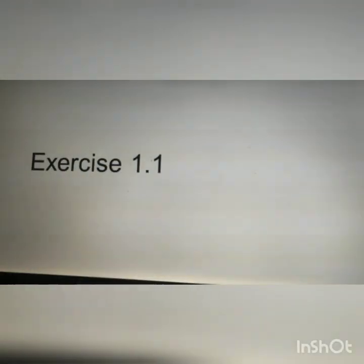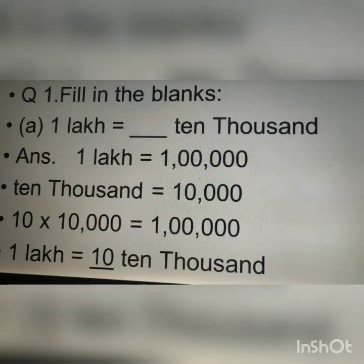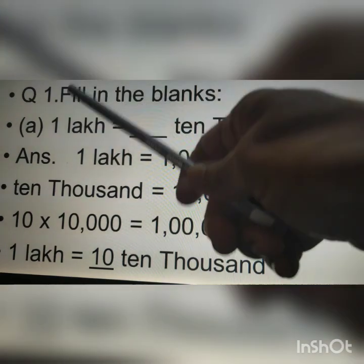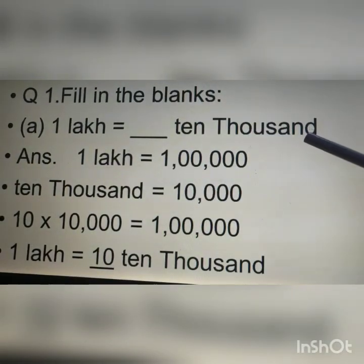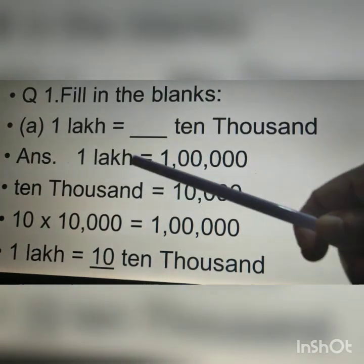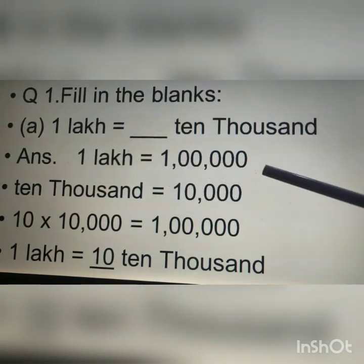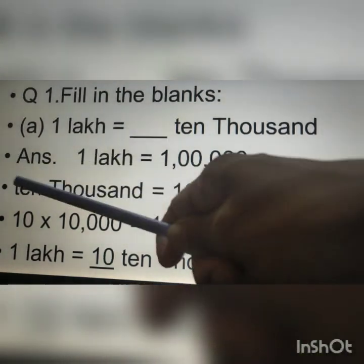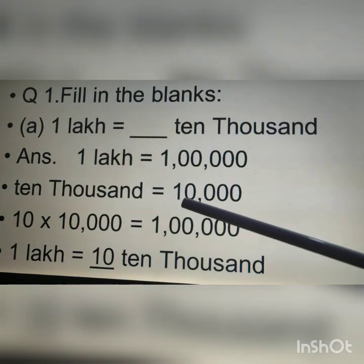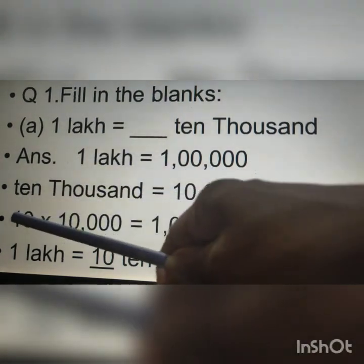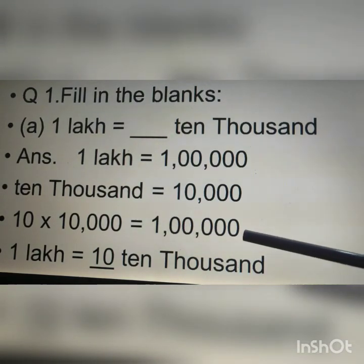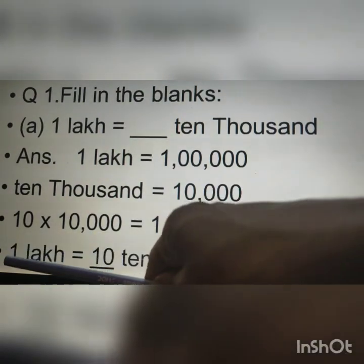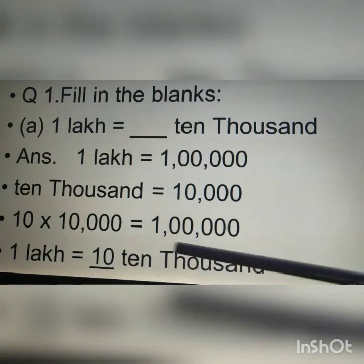Exercise 1.1. First question: 1 lakh is equal to how many 10,000? We know in 1 lakh there are 5 zeros and in 10,000 there are 4 zeros. If we multiply 10,000 with 10 we will get 1 followed by 5 zeros, that is 1 lakh. Therefore, 1 lakh is equal to 10 ten-thousands.